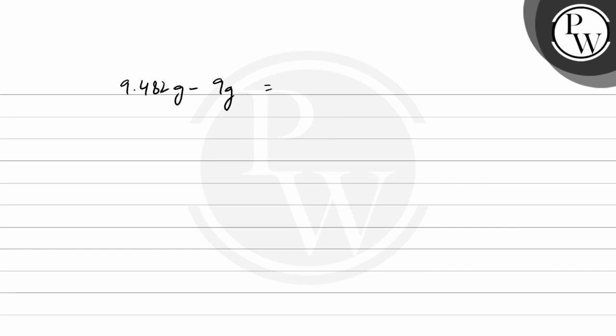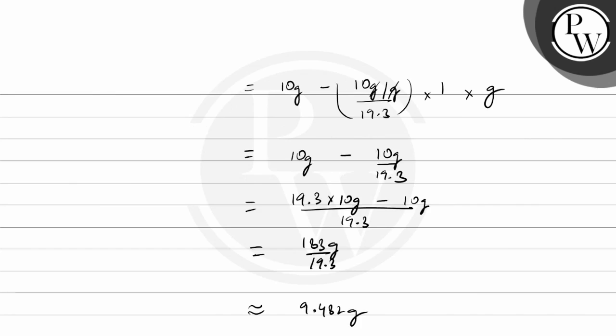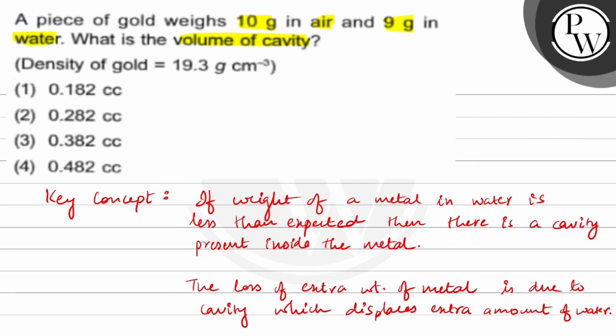CC means cubic centimeter. Let's check the options. Option 4 is 0.482 CC, so the final answer to this question is option 4.